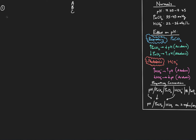Example number one: pH is 7.30, CO2 is 68, and bicarb is 32. We'll look at the effect on pH. We start by looking at the acid-base status. The pH is 7.30, which is below normal, which means we have an acidosis.